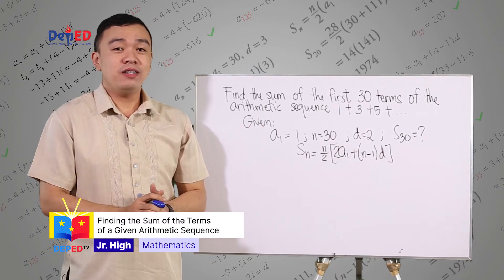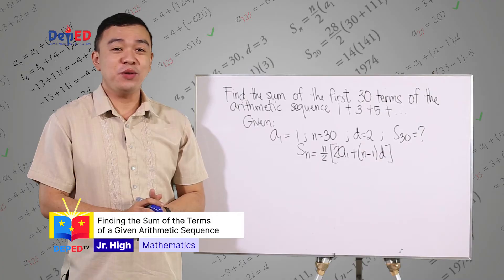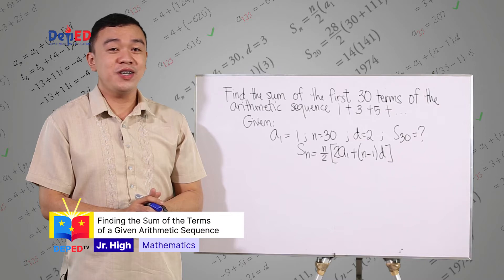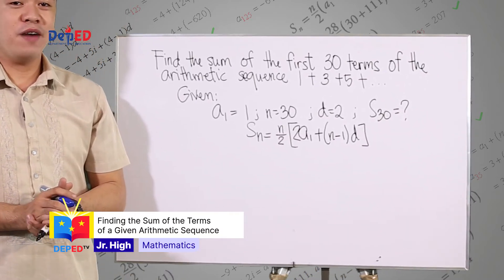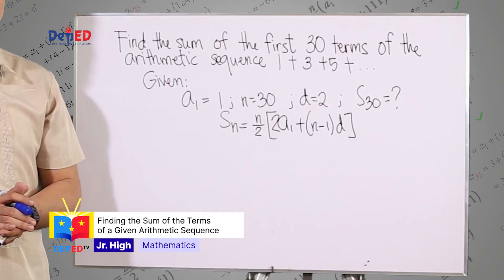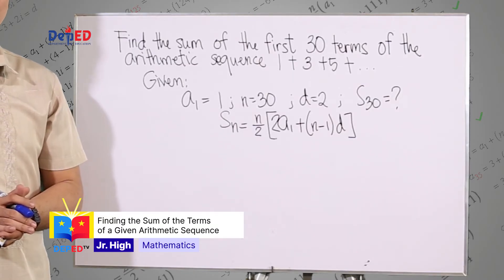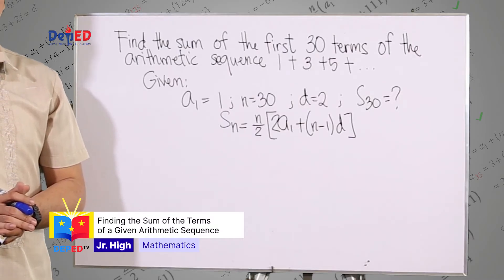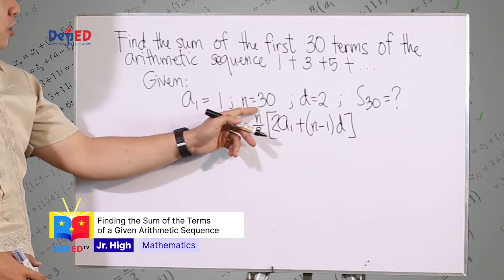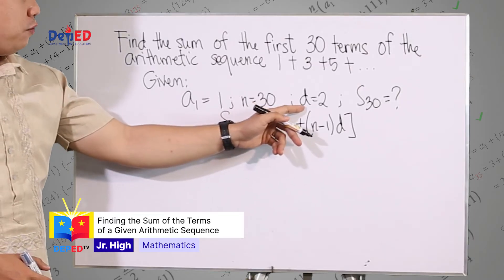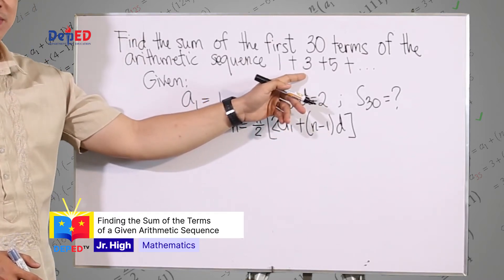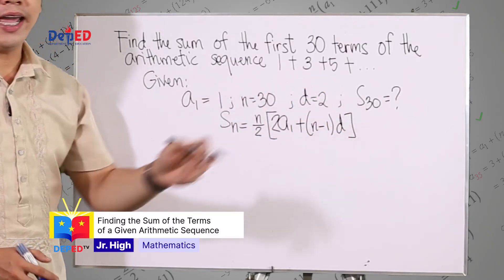After knowing all the needed concepts in finding the sum of an arithmetic sequence, let's try to answer the following exercises. Find the sum of each arithmetic series. The first one: Find the sum of the first 30 terms of the arithmetic sequence 1 plus 3 plus 5 and so on. Notice that in this problem, a sub 1 is equal to 1, n is 30, and the common difference is 2.